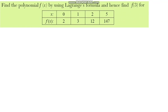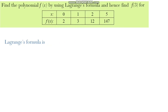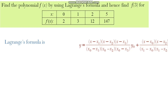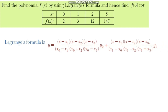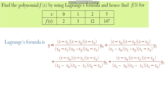Find the polynomial f(x) using Lagrange's interpolation formula and find f(3) for the given discrete data. The Lagrange interpolation formula for the discrete data involves, for the first term, excluding x₀ in the numerator and computing (x₀ minus x₁)(x₀ minus x₂)(x₀ minus x₃) in the denominator, multiplied by y₀. Subsequent terms proceed similarly, each excluding the respective xᵢ.